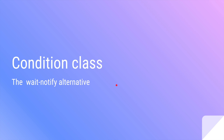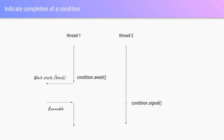The Condition class is one of the simplest yet very important parts of Java concurrency. Let's try to understand conceptually what a Condition class is. Let's say we have a thread one which, after doing certain operations, cannot move forward until a particular condition is met. In that case it will call condition dot await.